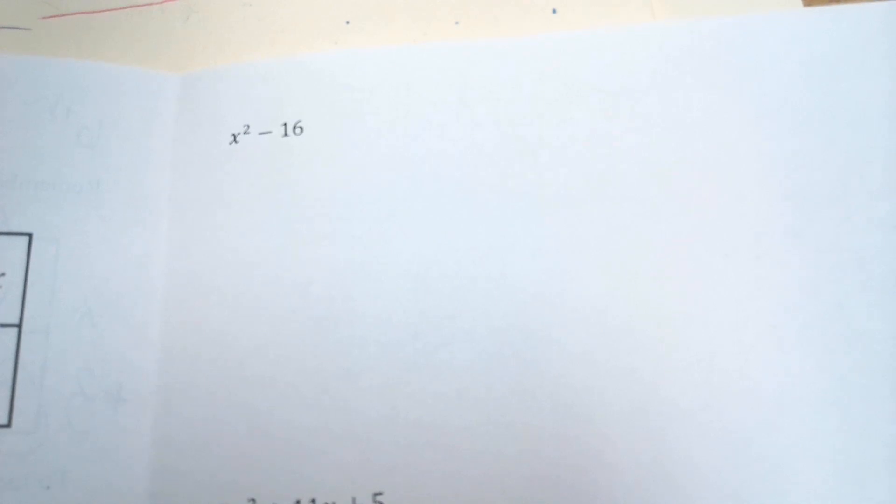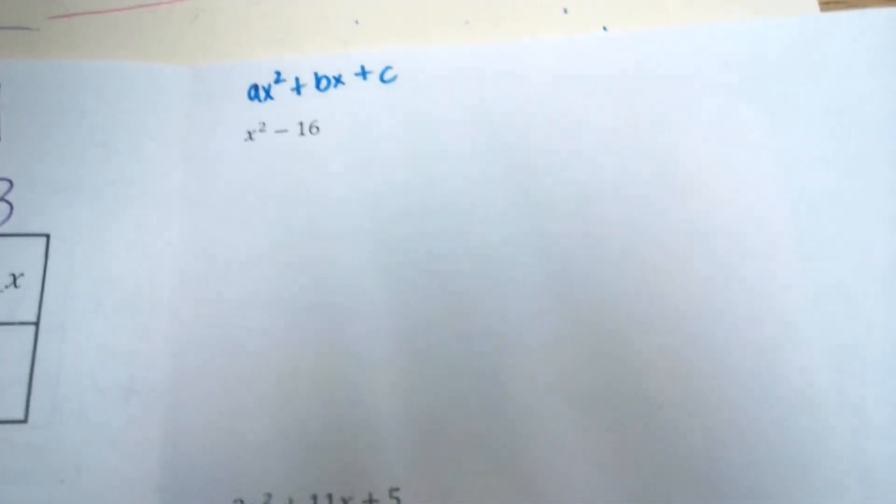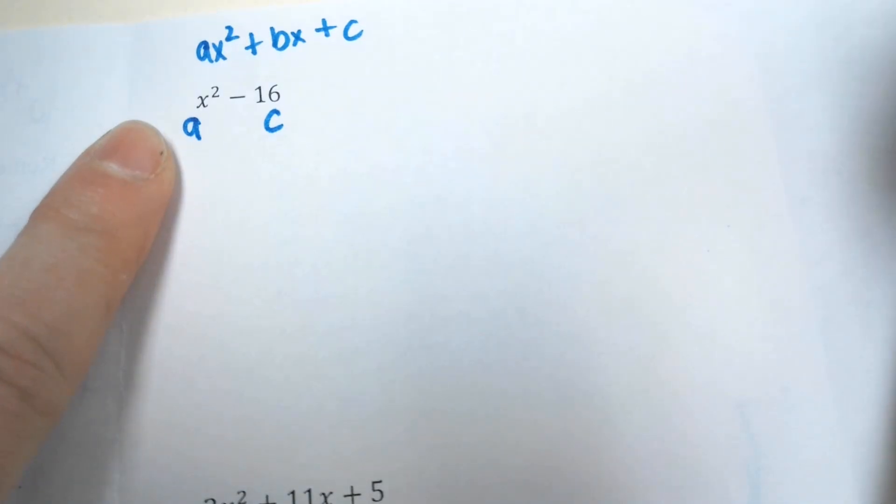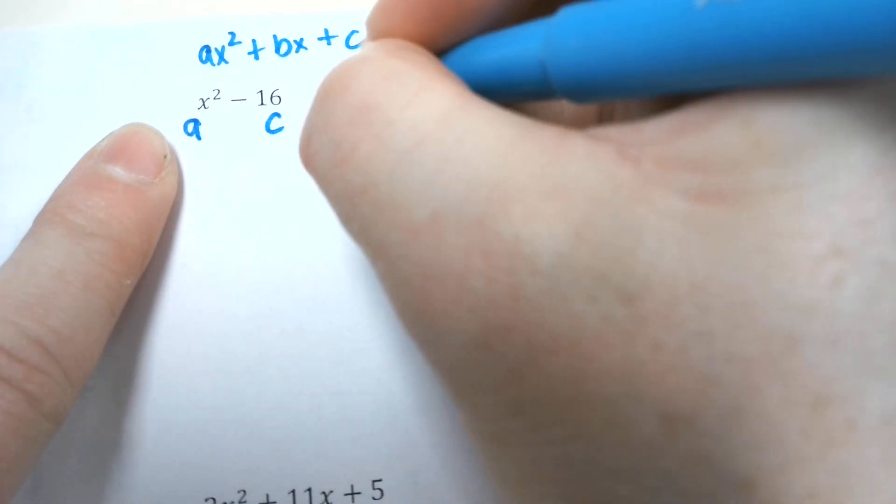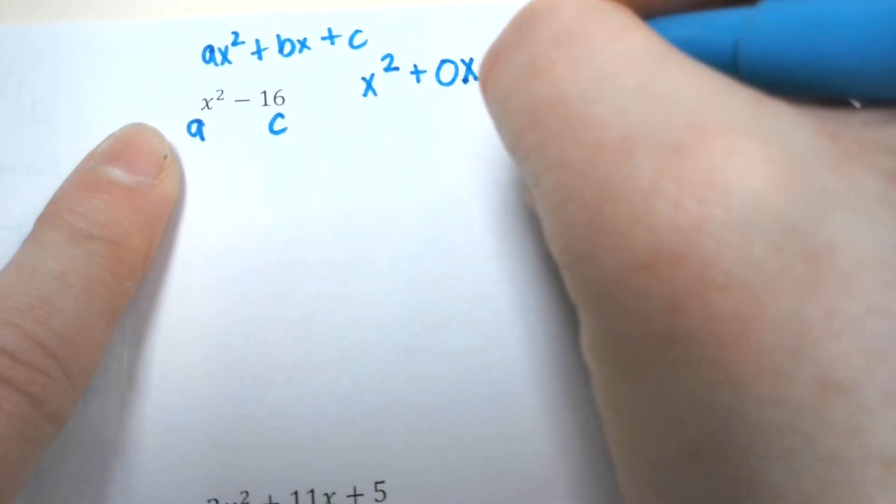x² - 16. So our rules say identify the A, B, and C first. Remember it's like Ax² + Bx + C. So if you look at this one, we don't have a middle term. We don't have that B value, we don't have that Bx. So if there is no B value, that means I can write 0x - 16.